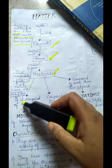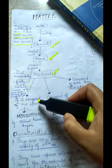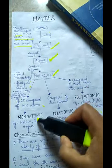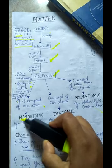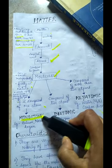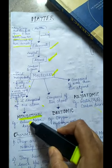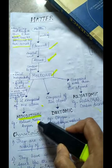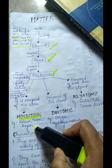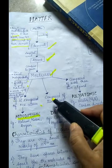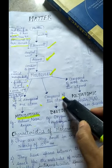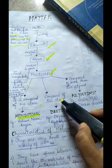If a molecule is composed of one atom, then it is called monoatomic. Examples include helium, neon, and argon. If a molecule is composed of two atoms, then it is called diatomic.